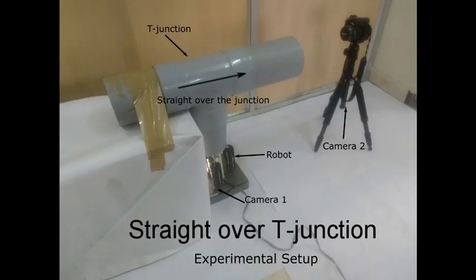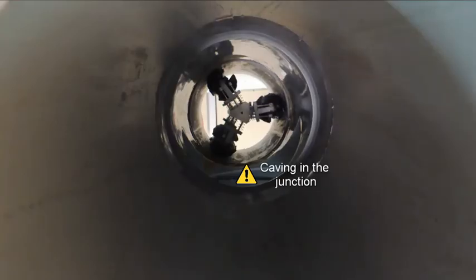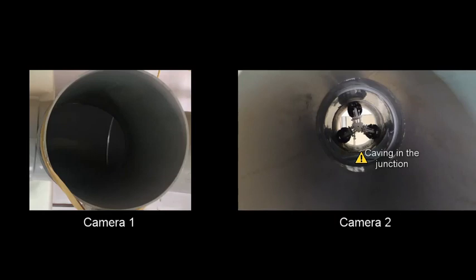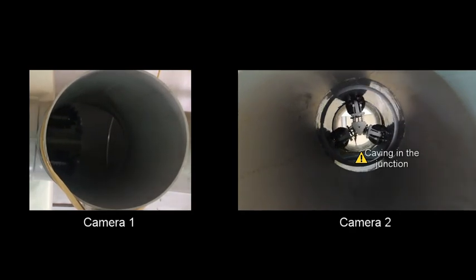In the second experiment the robot is driven straight over the T-junction. The holonomic motion capability also allows the robot to orient the modules away from the given region of the T-junction. This makes the movement smoother and also reduces the chances of the robot getting stuck compared to other robots.